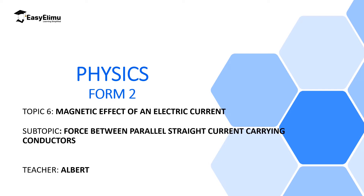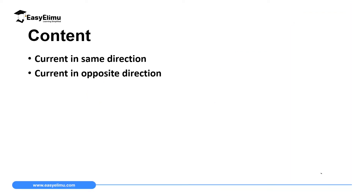Welcome to Easy Elimu, learning simplified. Welcome to this lesson. Today we are going to discuss force between parallel straight current conductors. We want to consider two parallel conductors carrying current in the same direction, and in another case, two conductors carrying current in opposite direction. My name is Albert. By the end of this lesson, I expect you to be able to describe what happens when two conductors carry current in the same direction and when two conductors carry current in opposite direction.